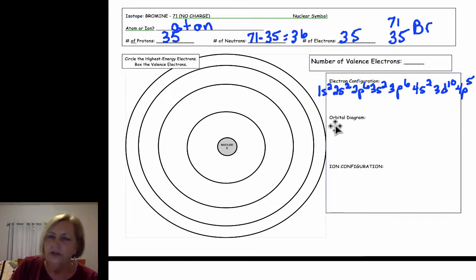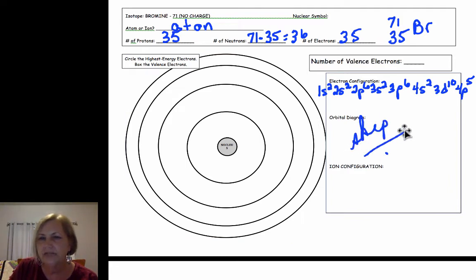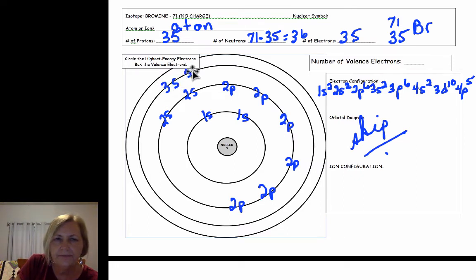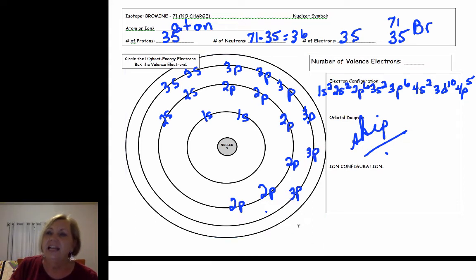I'm actually going to skip the orbital diagram on this example for time's sake. Now let's fill in this diagram. I have two 1s electrons, I have two 2s electrons and six 2p. Then I have my 3s electrons, two of them, and then I have my 3p electrons.